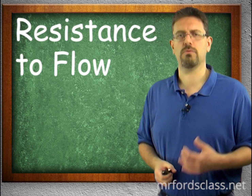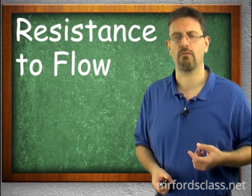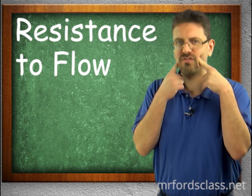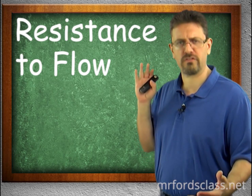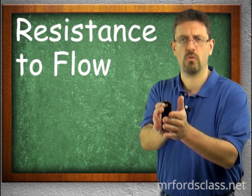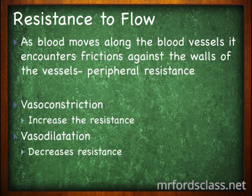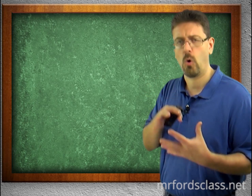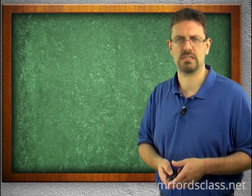It's like filling your cheeks with air and then releasing it — the arteries stretch during systole and recoil afterward, continuing the pressure on the blood. As blood moves along the blood vessels, it encounters friction against the vessel walls. This is known as peripheral resistance. Vasoconstriction — smaller diameter — increases resistance, while vasodilation — opening up — decreases resistance and makes blood flow easier.